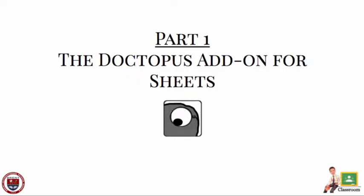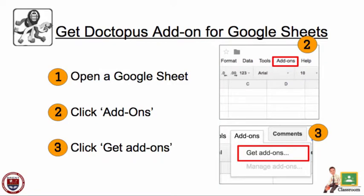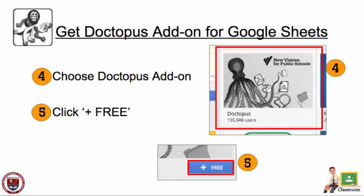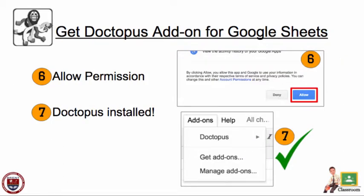The first thing we're going to talk about is the Doctopus add-on for Google Sheets. Open up a Google Sheet and click on Add-ons at the top of the screen. In the drop-down menu, click Get Add-ons. You're going to look for Doctopus, created by New Visions for Public Schools. Once you locate it, click on the blue Free button. When the Permissions screen shows up, click the blue Allow button. Now Doctopus is installed.